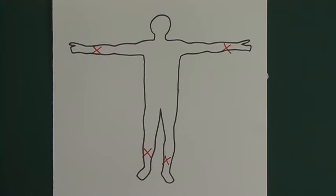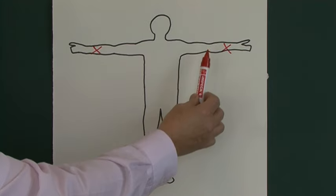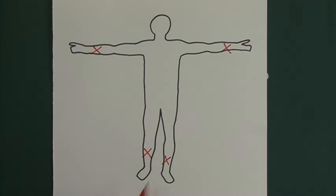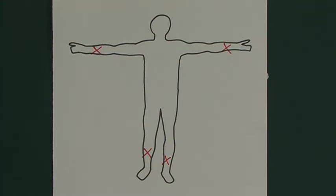So if we've got six pickups on the chest, that gives us ten leads in total, but it's called a 12-lead ECG. So how do we explain the fact that it's a 12-lead ECG?